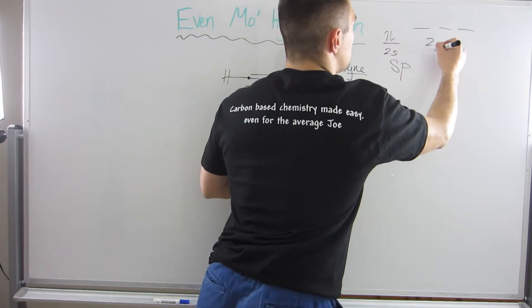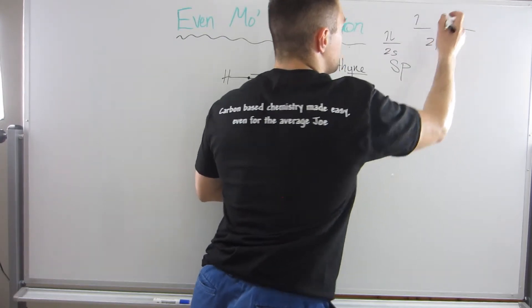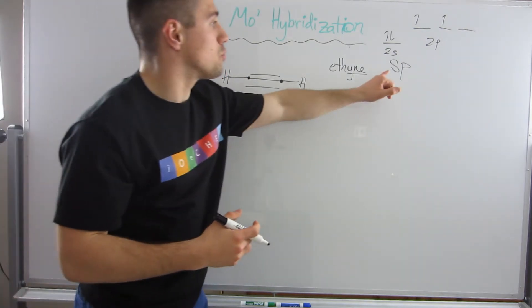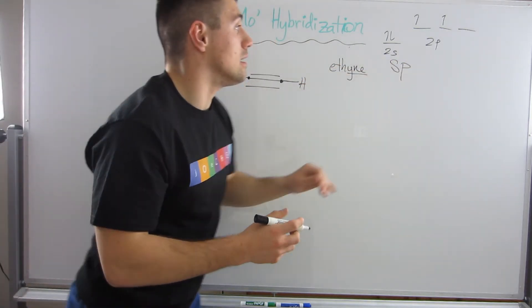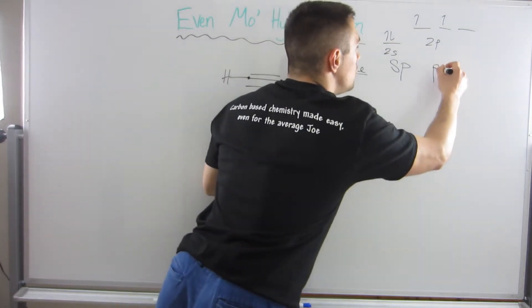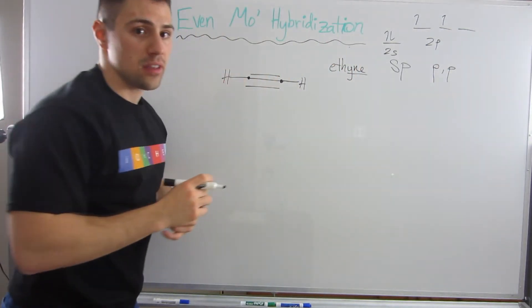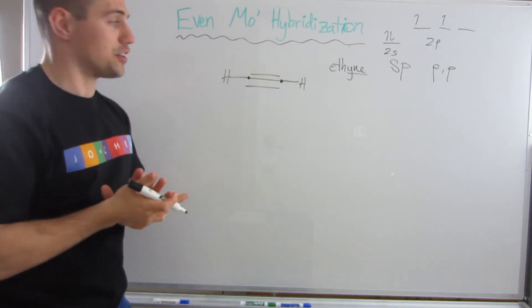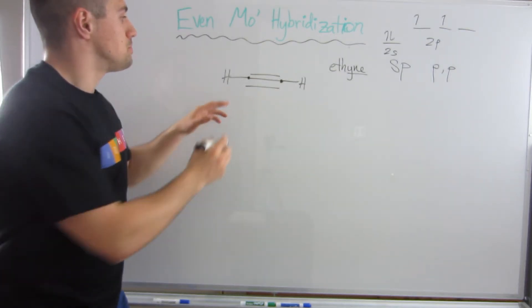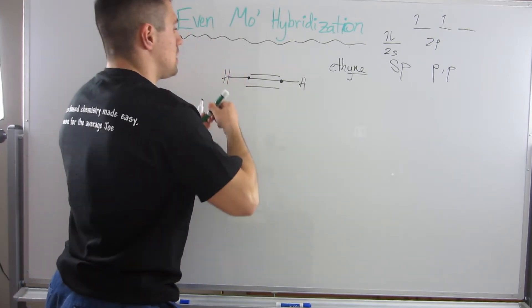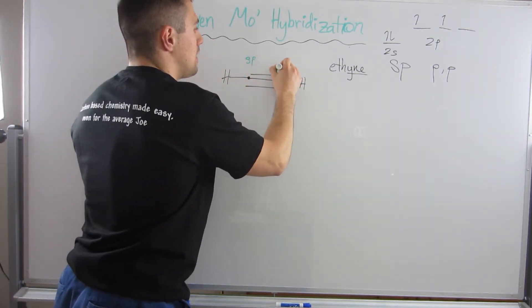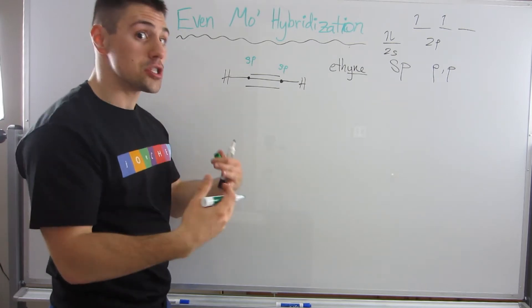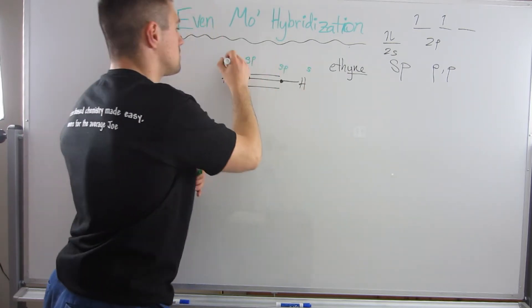If you're thinking ahead, remember our electron configuration looked like this: 2s and 2p. We have one s and three p orbitals available to make hybrid orbitals. We only used the s and one p, so now we have two p orbitals left over. Let's start our diagram. This carbon is sp, this is sp, and hydrogen has one bonding area, so it's just s and just s.